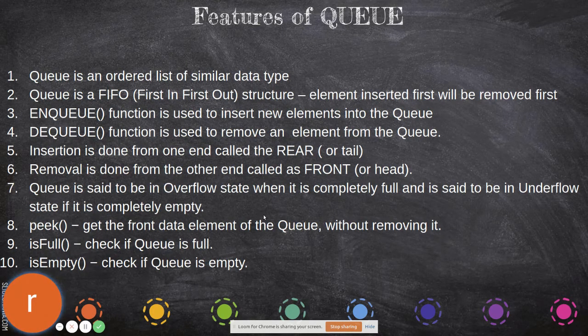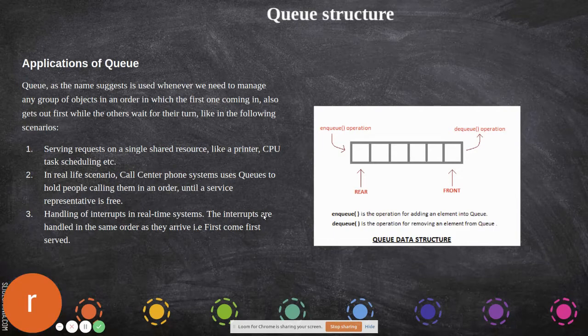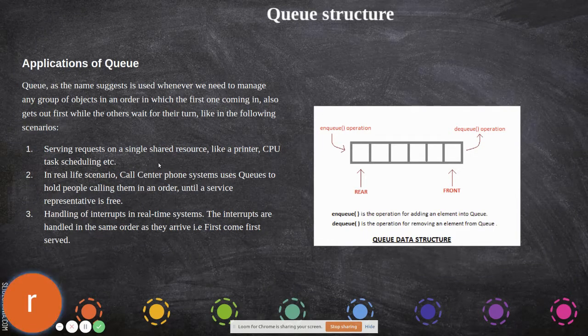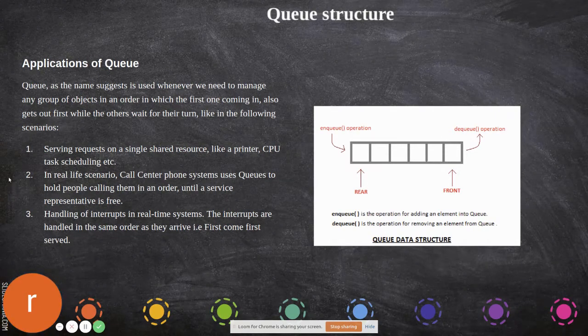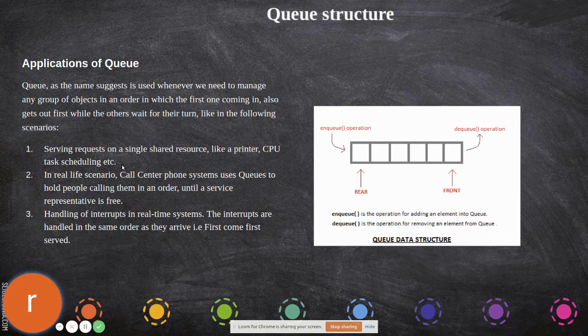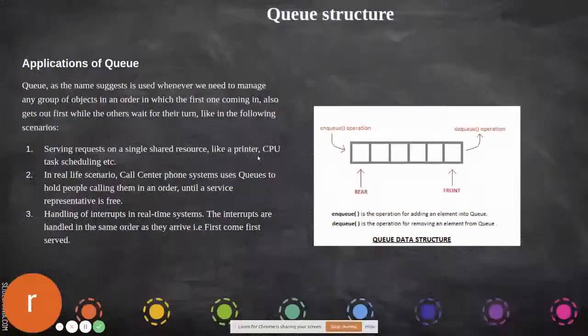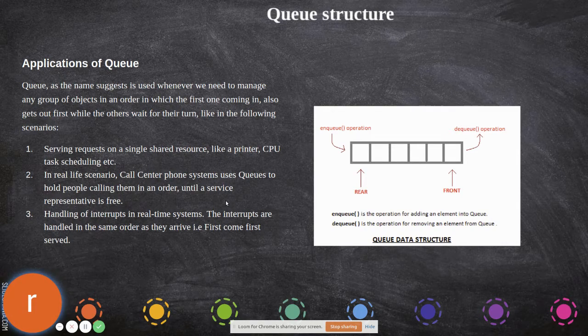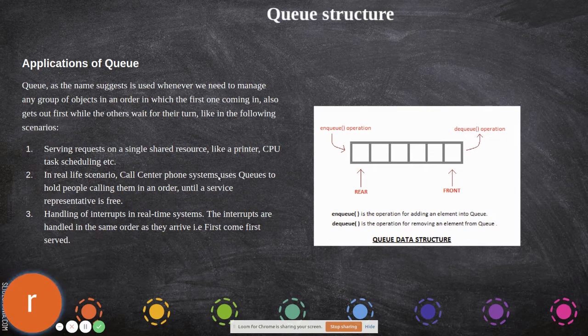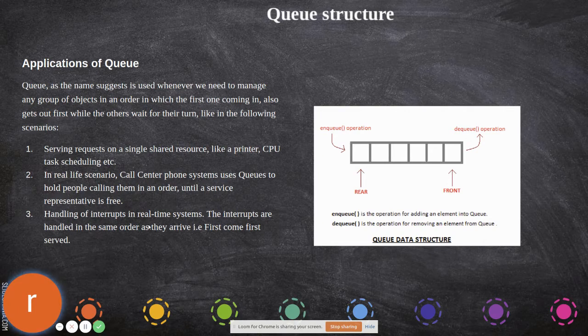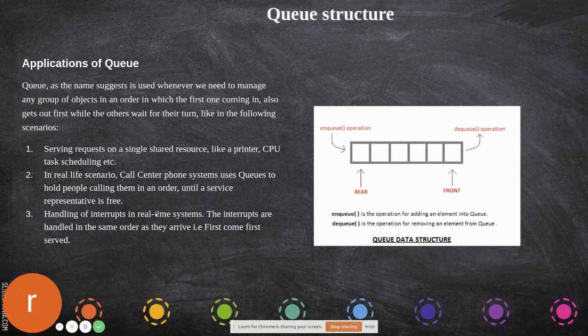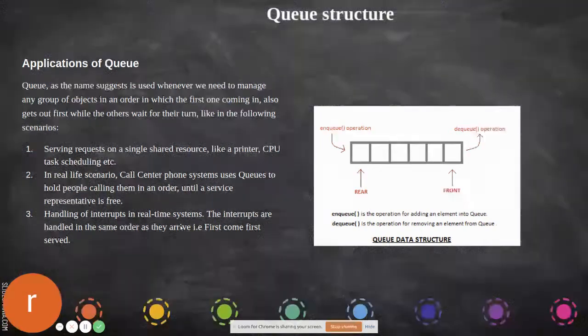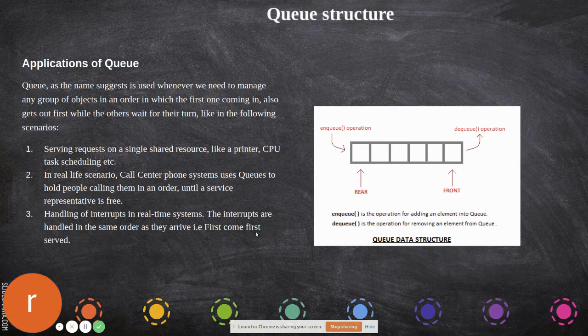Where do we apply the queue? Queue technique can be applied in serving requests on a single shared resource like a printer or CPU task scheduling. Queues are used in real applications - call center phone systems use queues to hold people calling them in order until a service representative is free. The handling of interrupts in real-time systems - in computers, interrupts are handled in the same order, first come first served.